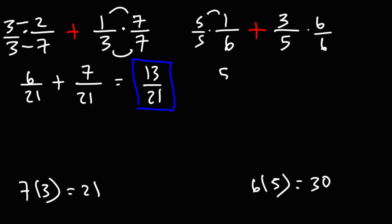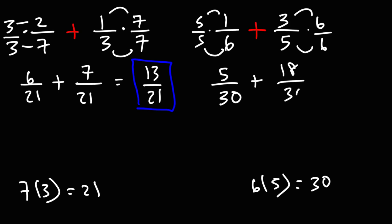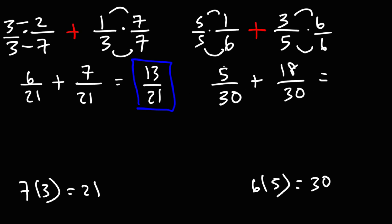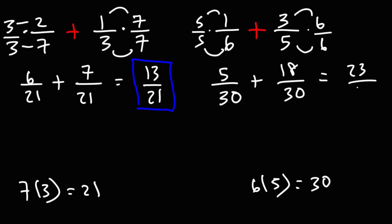So this is going to be 5 times 1, and 5 times 6 is 30. Here we have 3 times 6, which is 18, and 5 times 6 is 30. Notice that we have the same denominator, which means now we can add the numerators of the two fractions. 5 plus 18 is 23, so we're going to get 23 over 30.